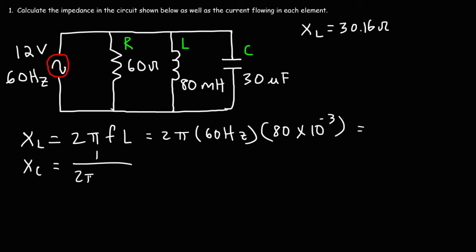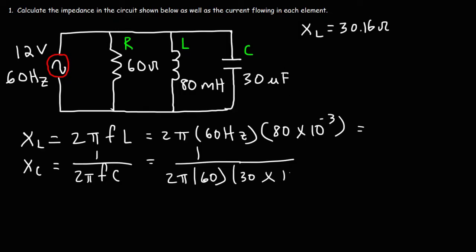Now let's calculate the capacitive reactance. It's 1 over 2πfC. f is still 60 hertz, and the capacitance is 30 microfarads, where micro is 10 to the minus 6. So it's 1 over 2π times 60 times 30 times 10 to the minus 6. XC is 88.42 ohms. If you're not getting that answer, make sure you put everything in the bottom of the fraction in parentheses when you plug it into your calculator.